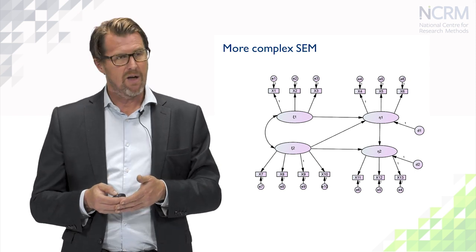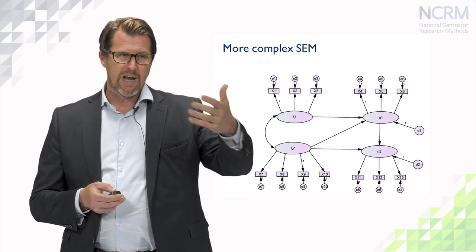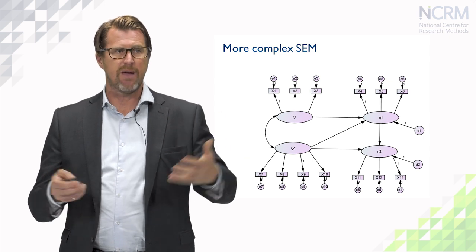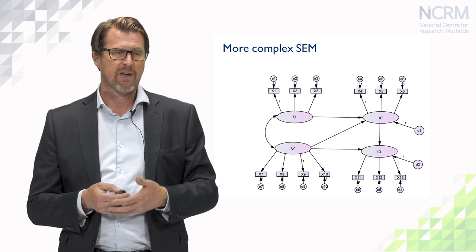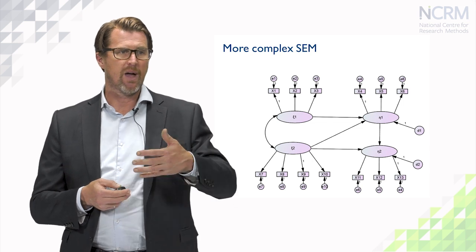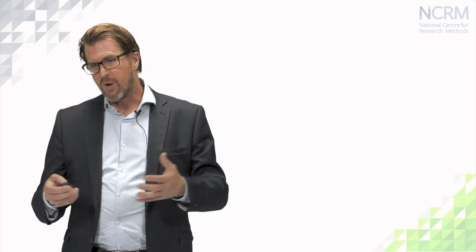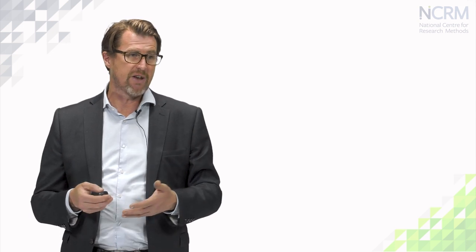Here we have an example of a more complicated model, but this should relate to our theoretical expectations about what generated the data we're analysing. We would recover the parameter estimates for the beta weights in this model and check the fit of the data using the kind of indices we saw in the previous videos. If we have a well-fitting model, we would make some inferences about the theory that led us to develop this model — does the model fit the data, and do the parameter estimates support or reject the hypotheses?